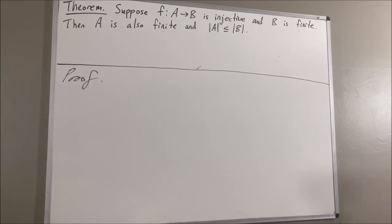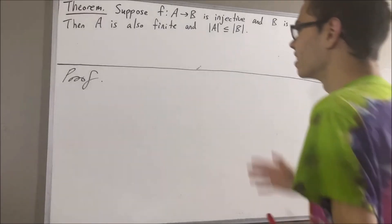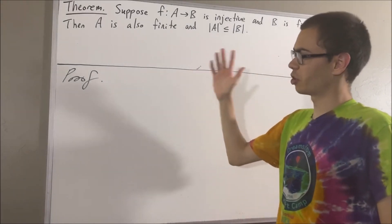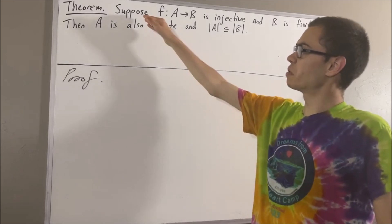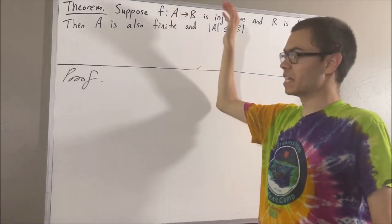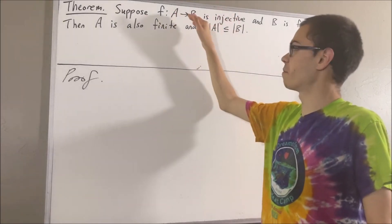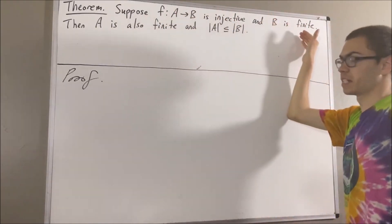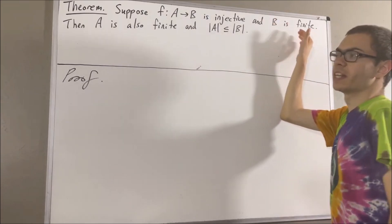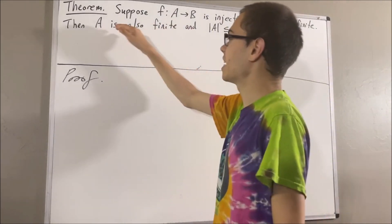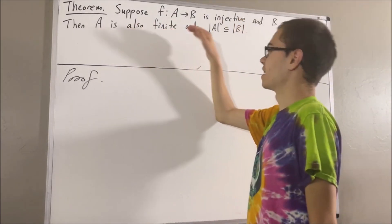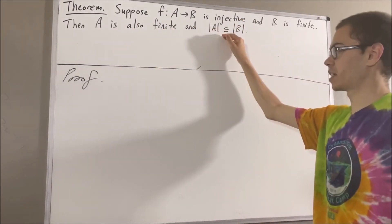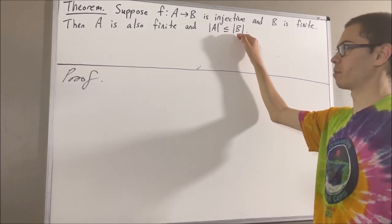Hello! In this video, we are going to prove the following theorem. Suppose F is an injective function from A to B, and B is finite. Then A is also finite, and the number of elements in A is less than or equal to the number of elements in B.